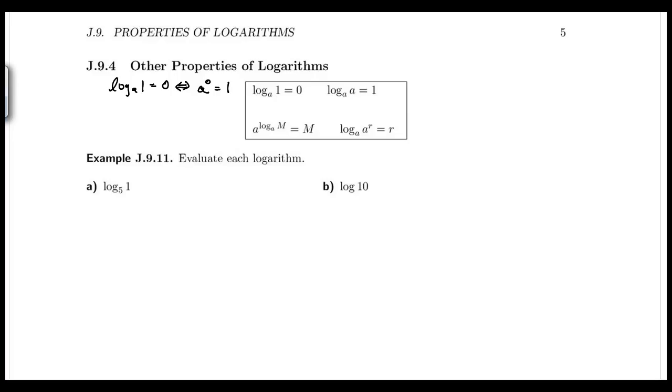So log base a of 1 equals 0. Remember, that's just saying that the base a of the exponent 0 is equal to 1, which makes sense. Anything to the 0 power is 1. This one down here makes total sense, even though it looks weird. a to the log base a of m, that log is an exponent, that looks weird. But if you think about it, remember the logs are equal to exponents. So this is like log of the base a of the value m is equal to the exponent log base a of m. Totally makes sense.